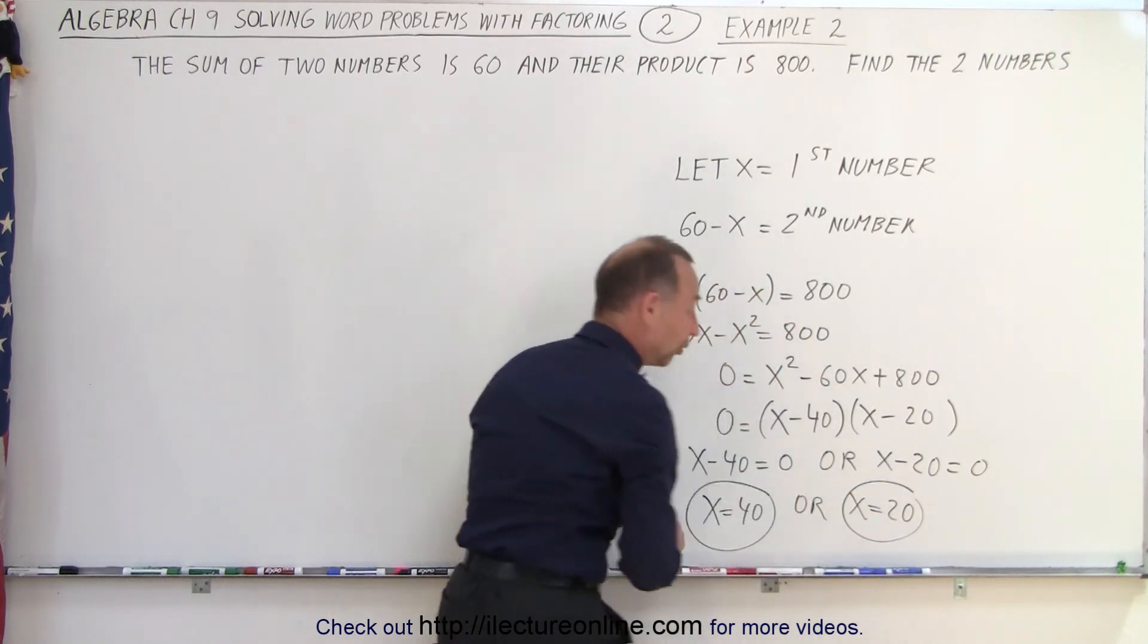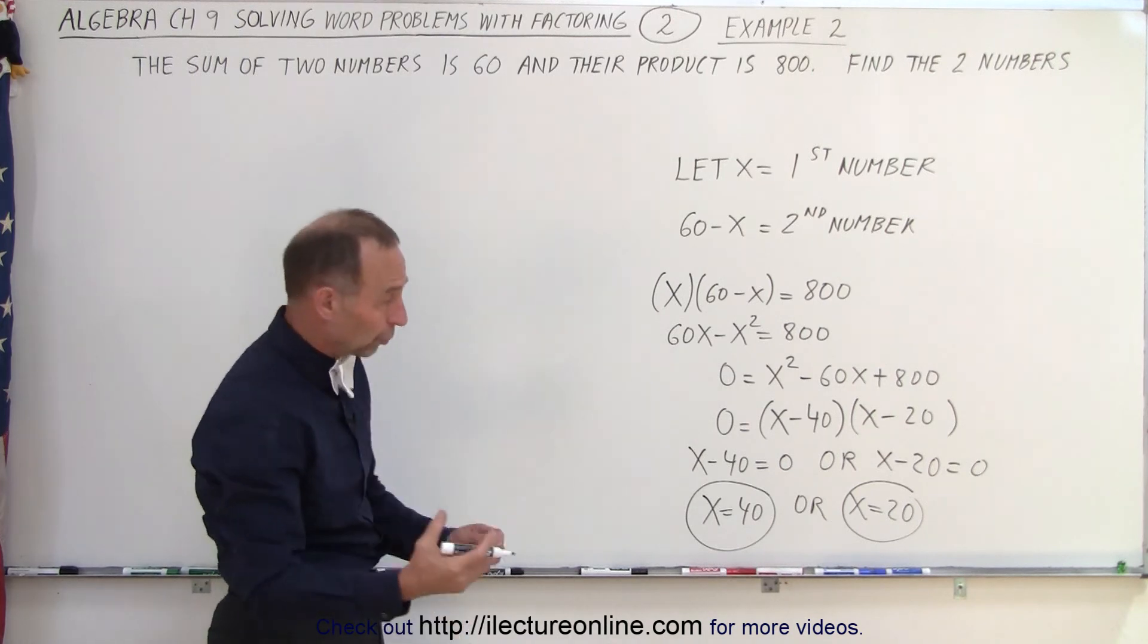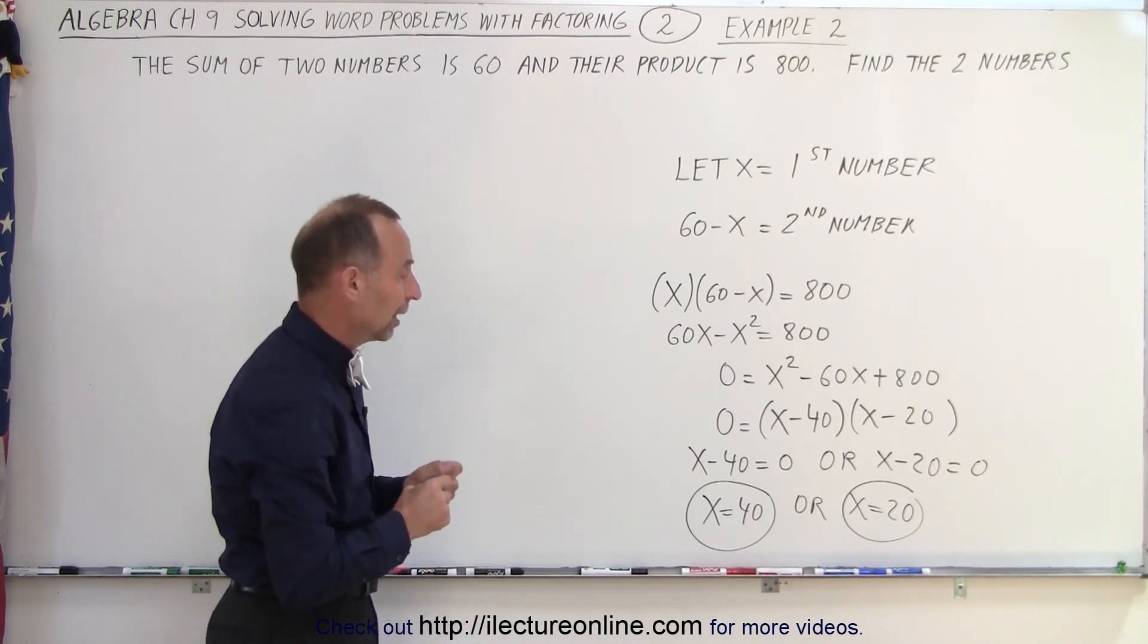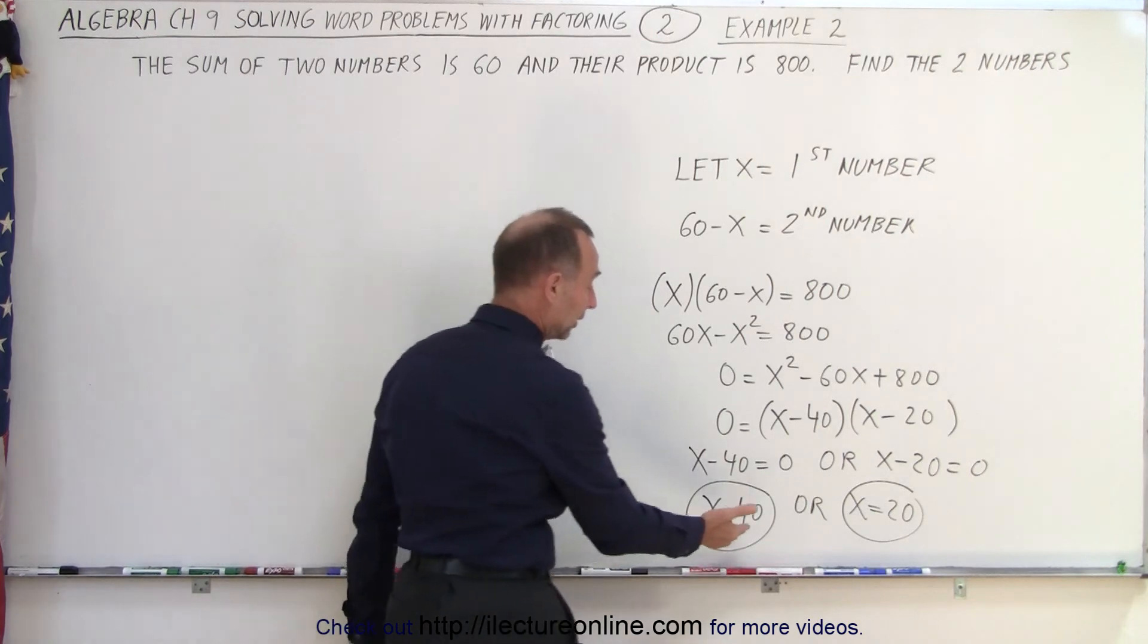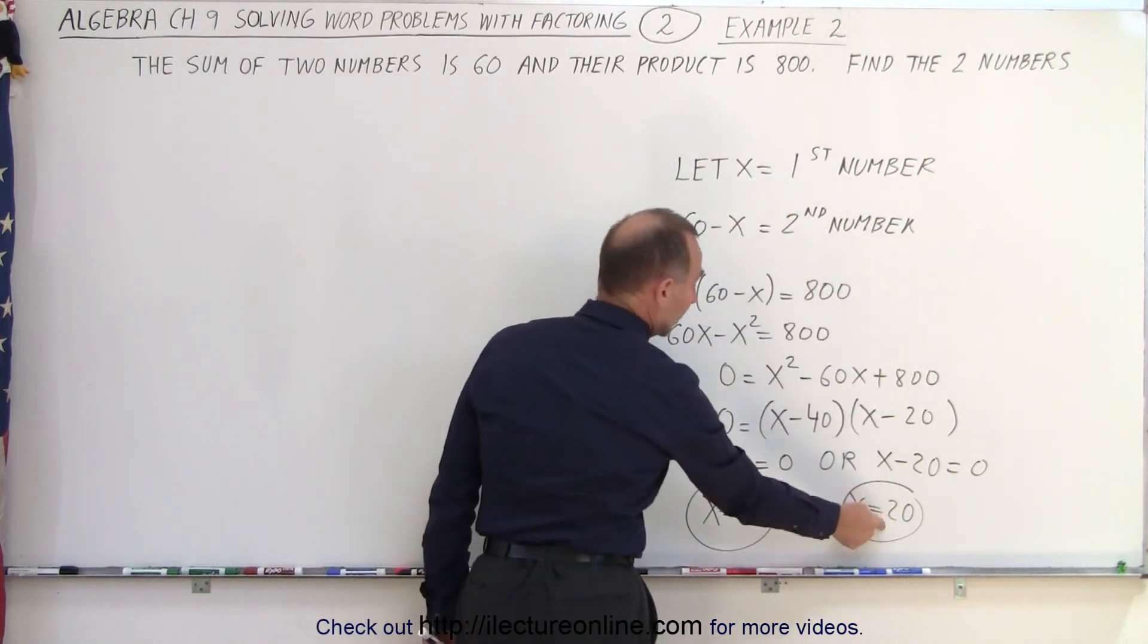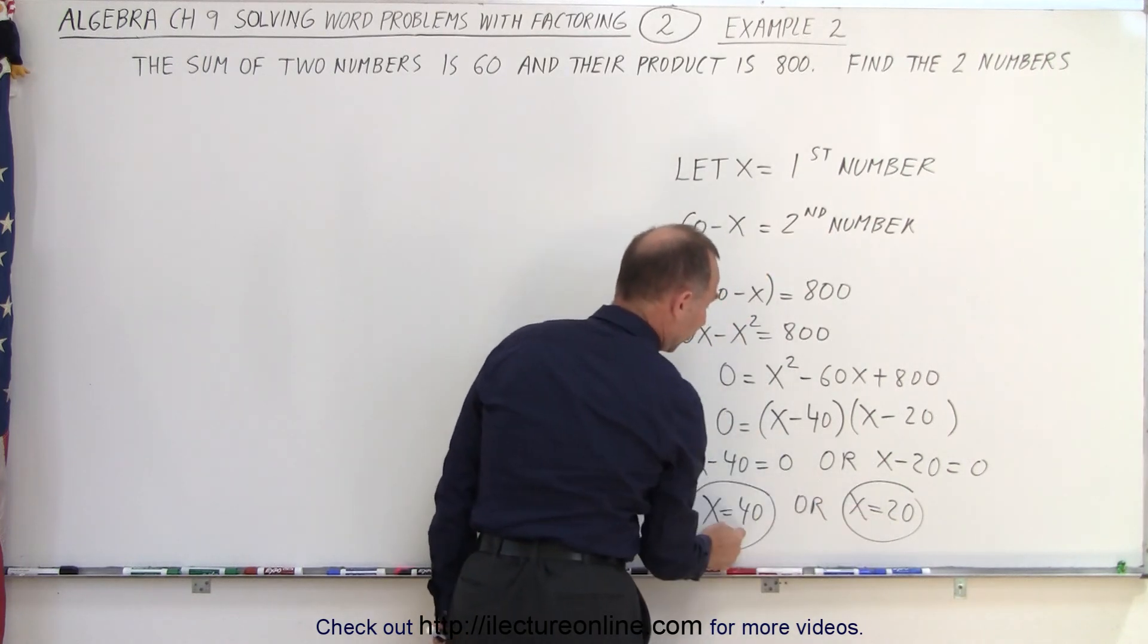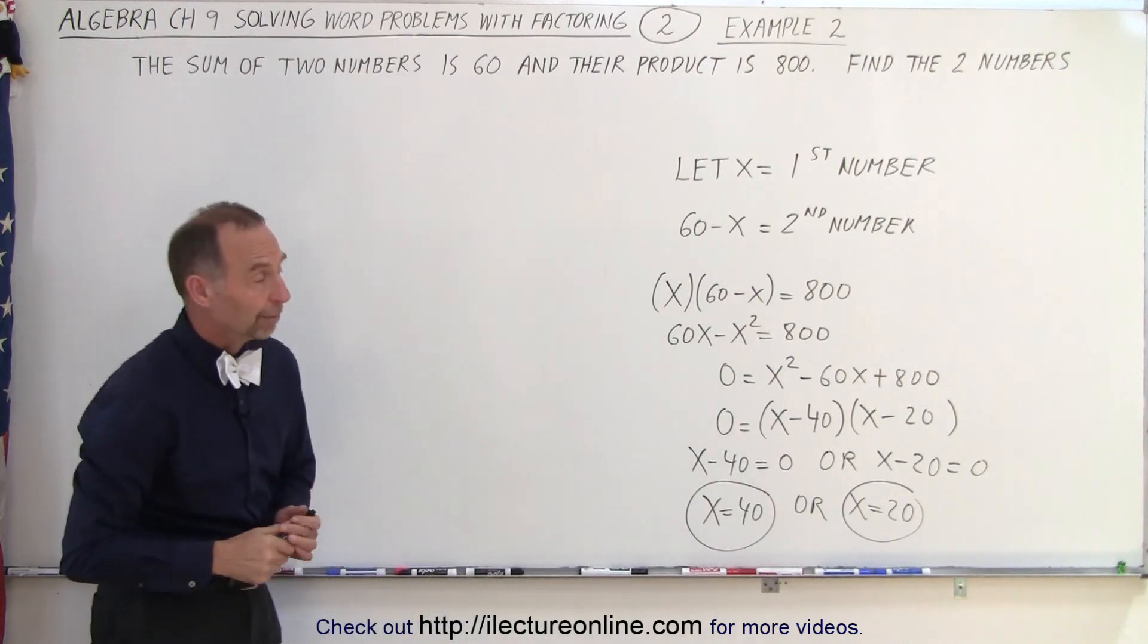Now, even though we say or, because it can only be one or the other at the same time, that does tell us that there's two numbers, one that's 40 and one that's 20. And so, if I let one equal 20, 60 minus 20 is 40, and 20 times 40 is 800, and that will solve our problem.